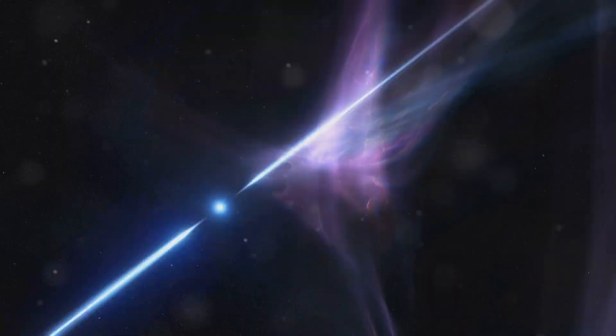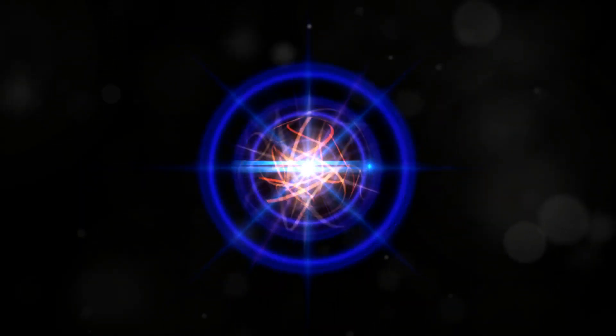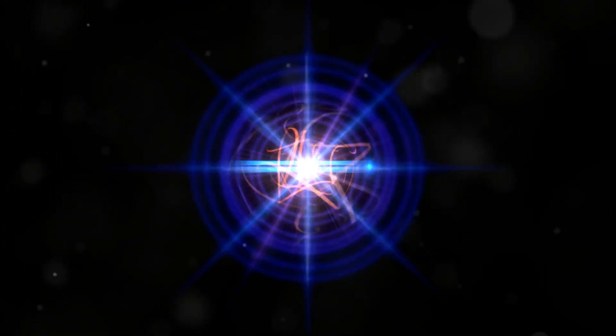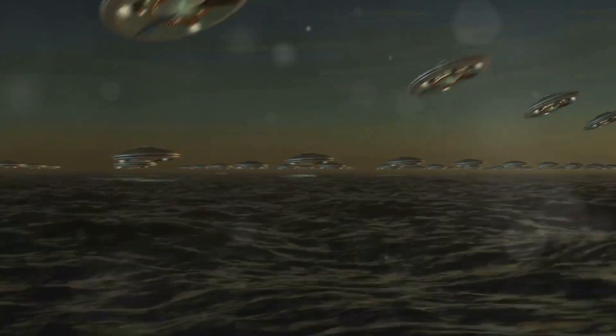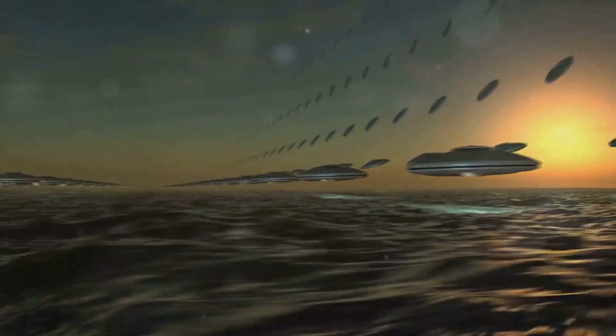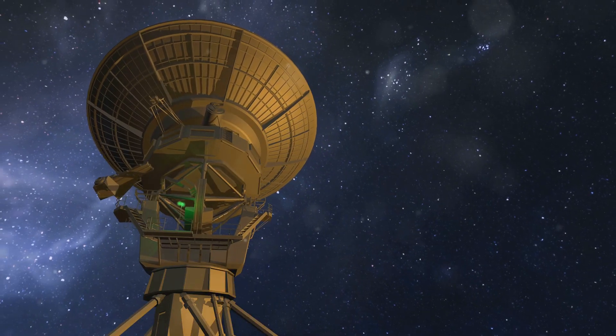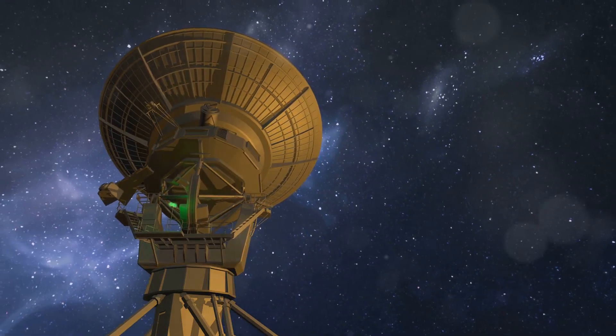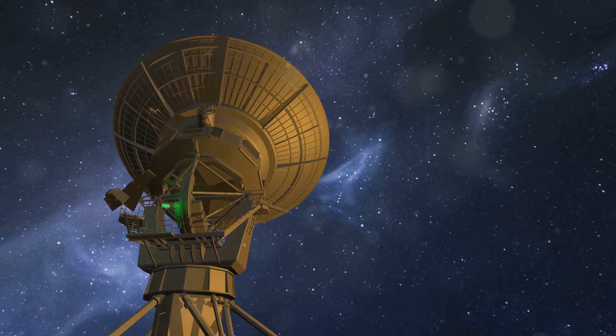What could produce such energy in such a short time? Some suggest that FRBs might come from neutron stars or magnetars, dead stars with magnetic fields trillions of times stronger than Earth's. Others propose more exotic sources, like the signatures of advanced alien technologies. But despite hundreds of detections, the true cause of FRBs remains hidden in the vastness of space.